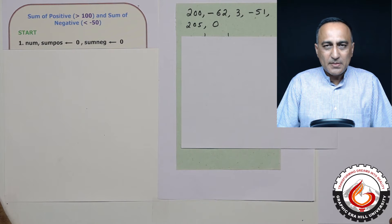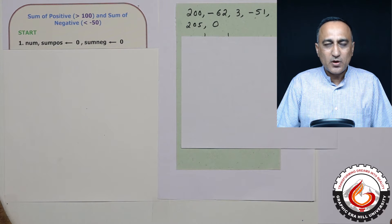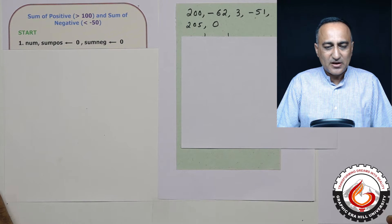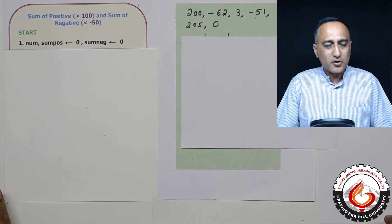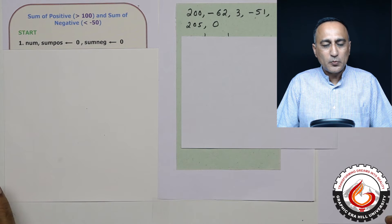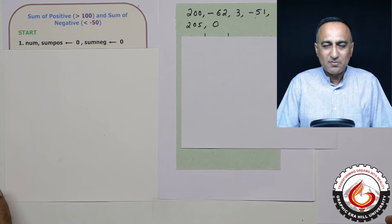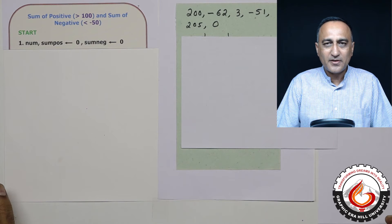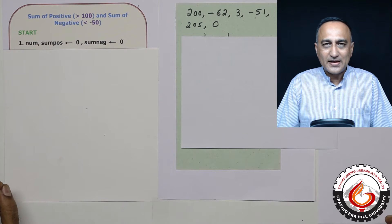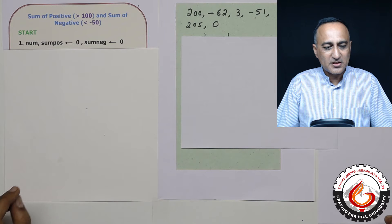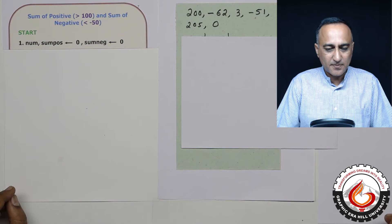The program imposes one more condition: when the user enters zero, you are required to print the sum of positive and sum of negative, taking into consideration the conditions mentioned.